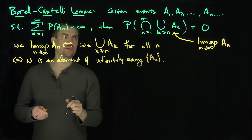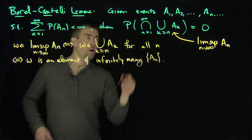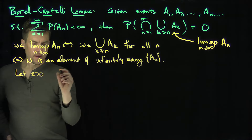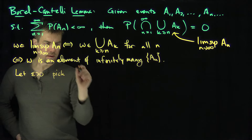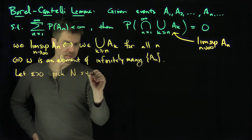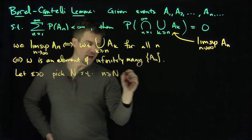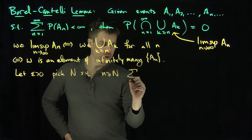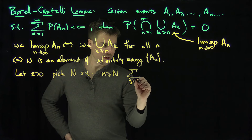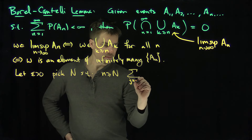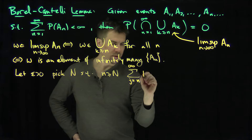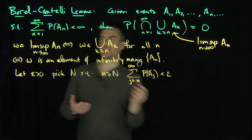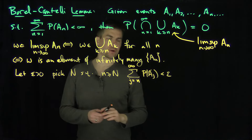So how do we prove something like this? Let's prove it — it's actually relatively straightforward. We let epsilon greater than 0, and pick N capital such that if n is bigger than or equal to N capital, the sum for j going from n to infinity of the probability of AJ is less than epsilon. For a convergent series, if the series is less than infinity, the tail of the series has to be arbitrarily small.